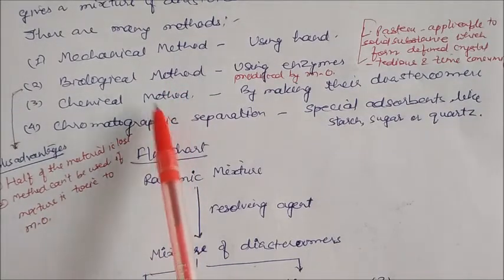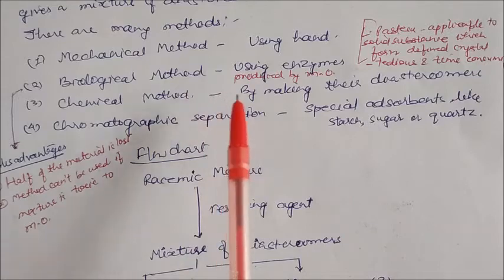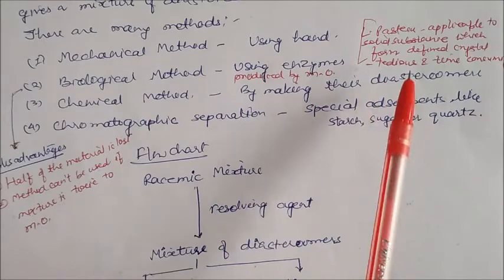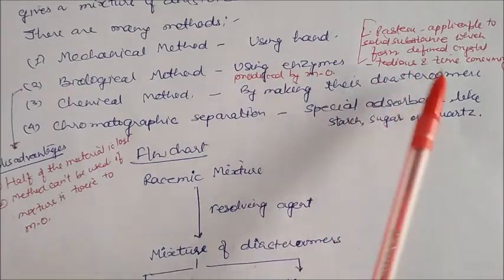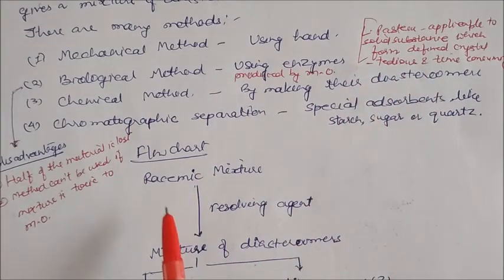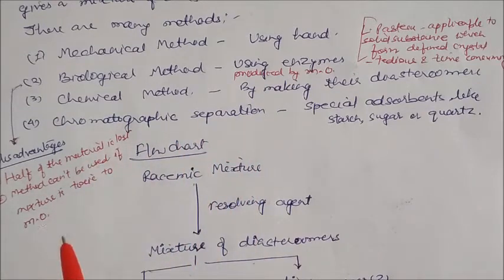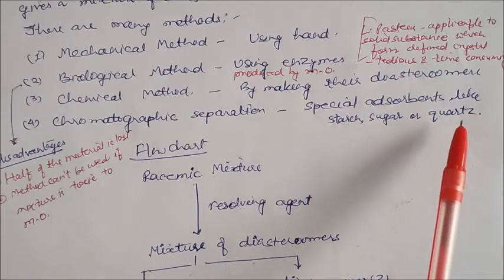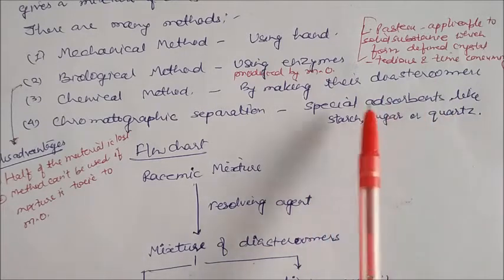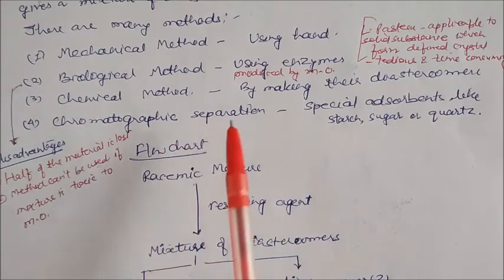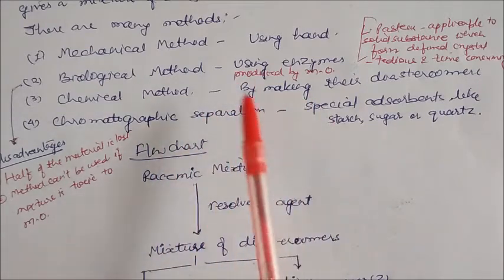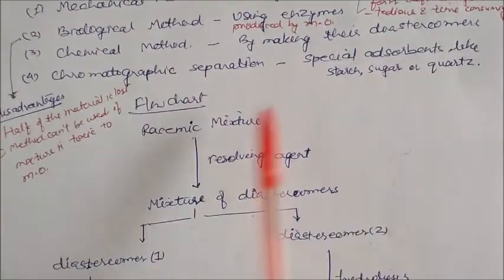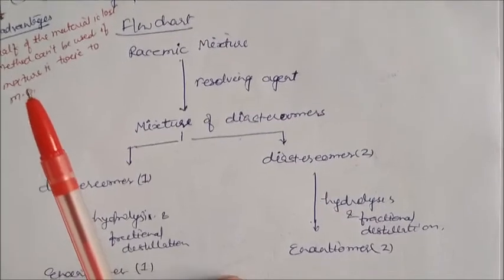Next is the chemical method — this is the very best and very good method. In this case, we make diastereomers, and once diastereomers are formed, we can easily separate them because their physical properties are different. Chromatographic separation is another technique — in this we use a special adsorbent like starch, sugar, and quartz. These will adsorb one of the diastereomers so the second diastereomer can be separated. We will discuss only the chemical method, as that is in our syllabus.